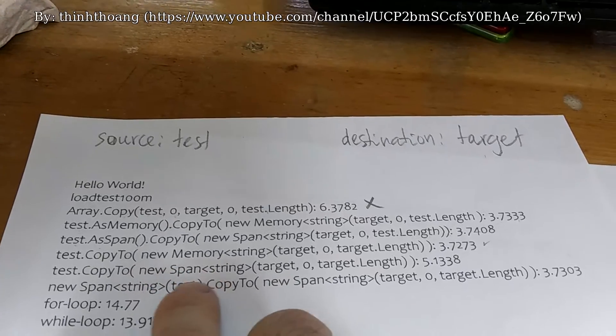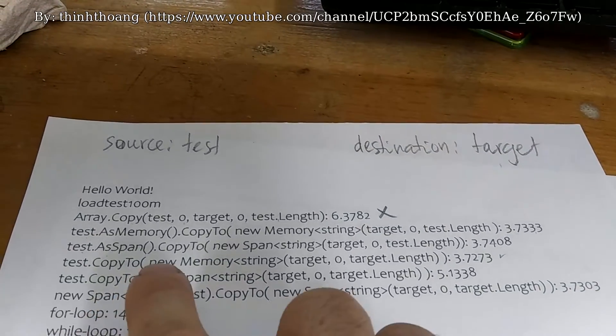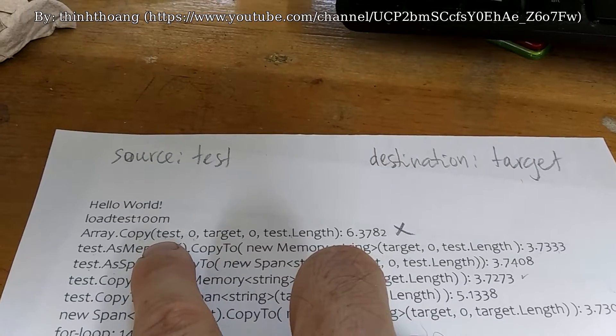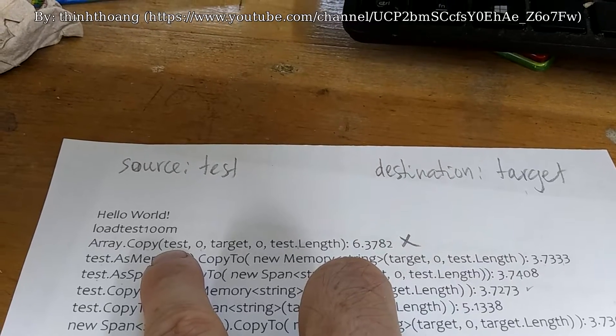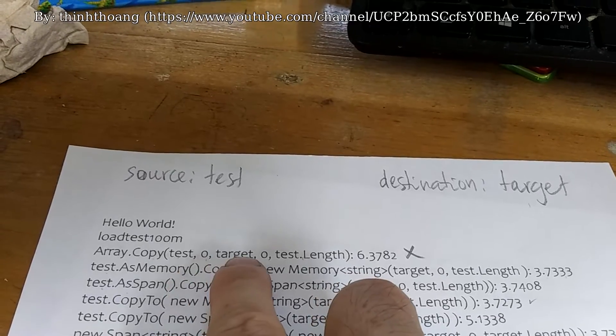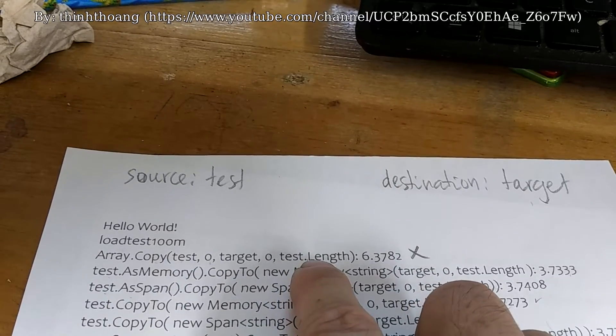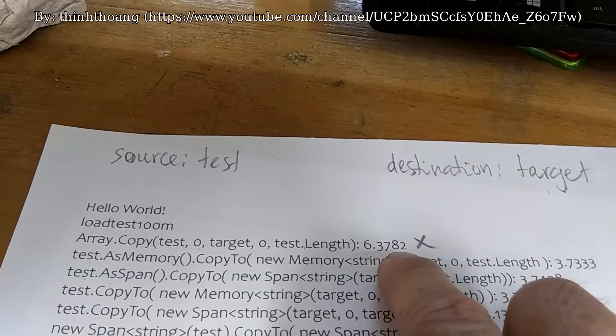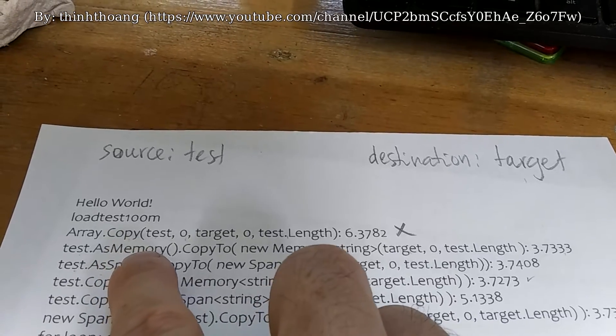This follows this while loop. It is the actual call. The first parameter is the source array and source array index, target array, target array index, and number of elements to copy. It takes 6.37 milliseconds. These methods are better and faster.